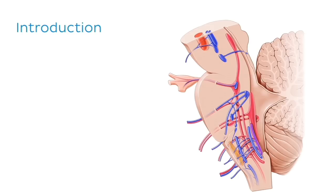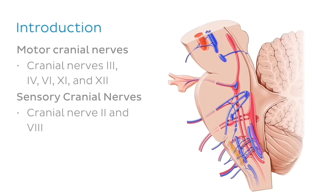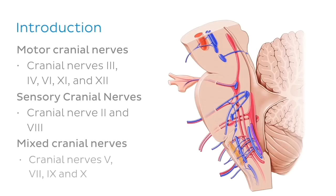Generally, we can identify three types of cranial nerves. These are motor cranial nerves — cranial nerves 3, 4, 6, 11, and 12 — sensory cranial nerves — cranial nerve 2 and 8 — and finally mixed cranial nerves, which include cranial nerve 5, 7, 9, and 10.